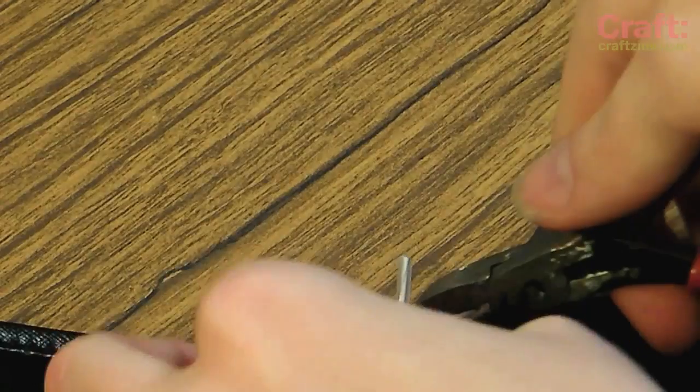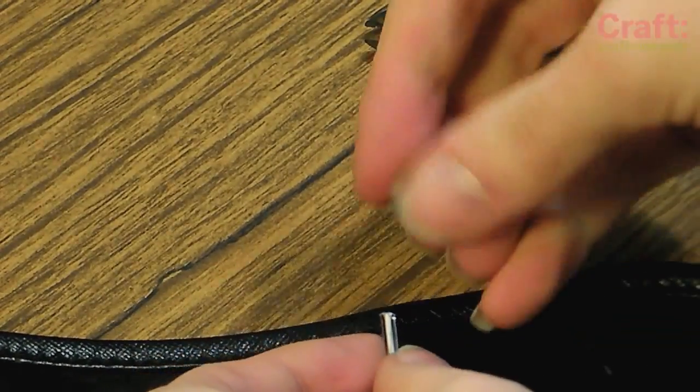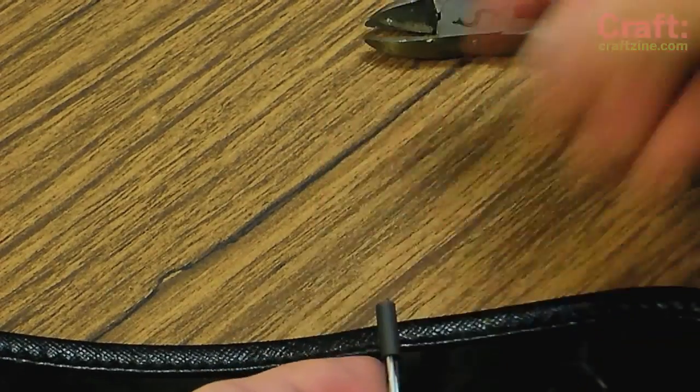Finally you'll want to protect that other end. You can do that simply by cutting a small piece of the little heat shrink and then shrinking it on top.